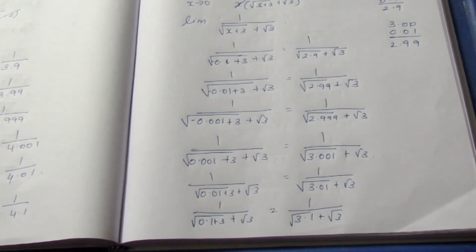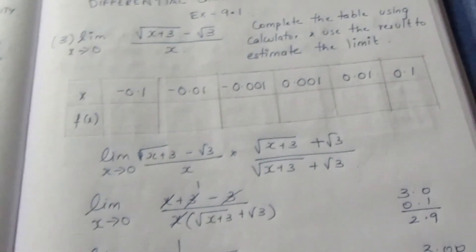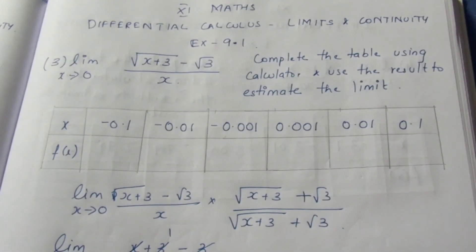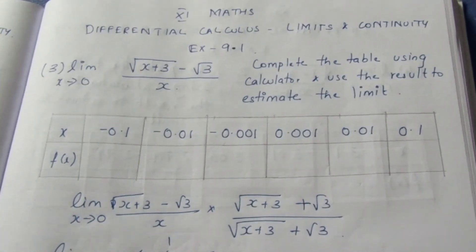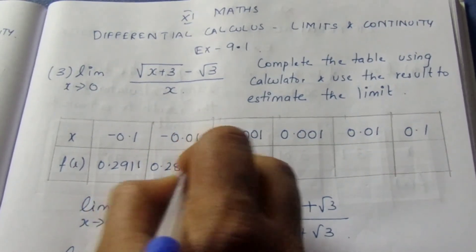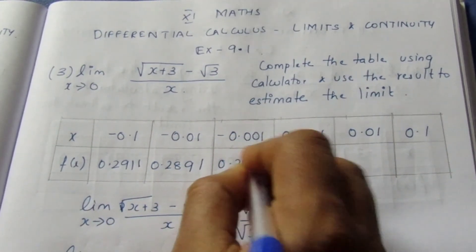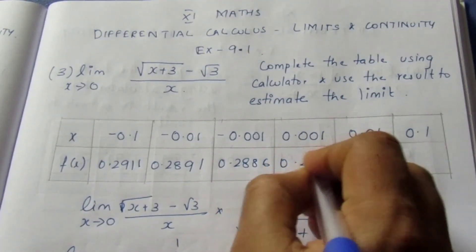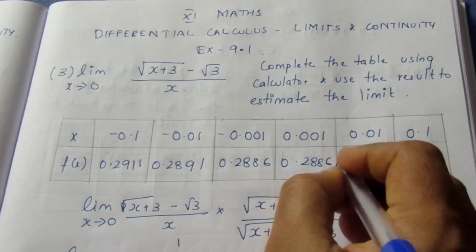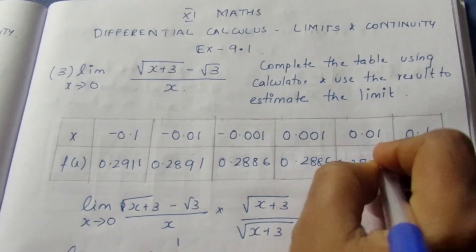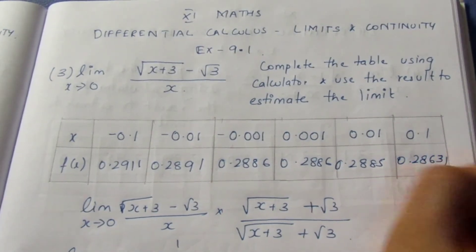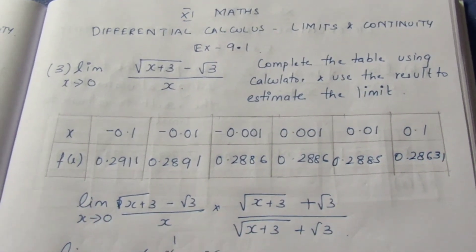We can use the calculator to compute all these values. The answers are approximately 0.2911, 0.2891, 0.2886, 0.2886, 0.2885, and 0.2861. So the estimated limit is approximately 0.2886. Thank you.